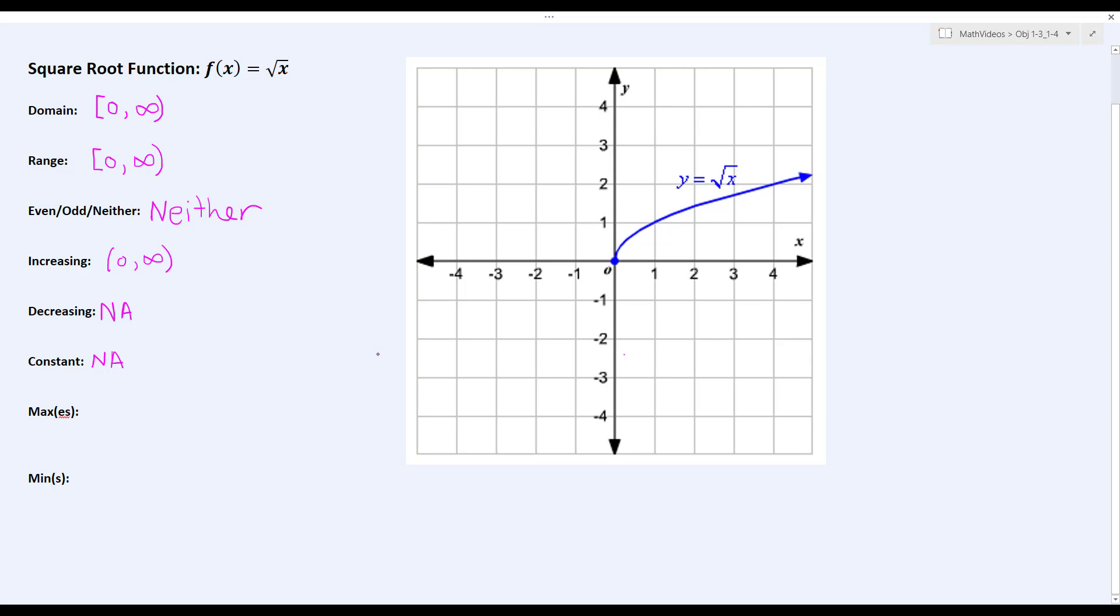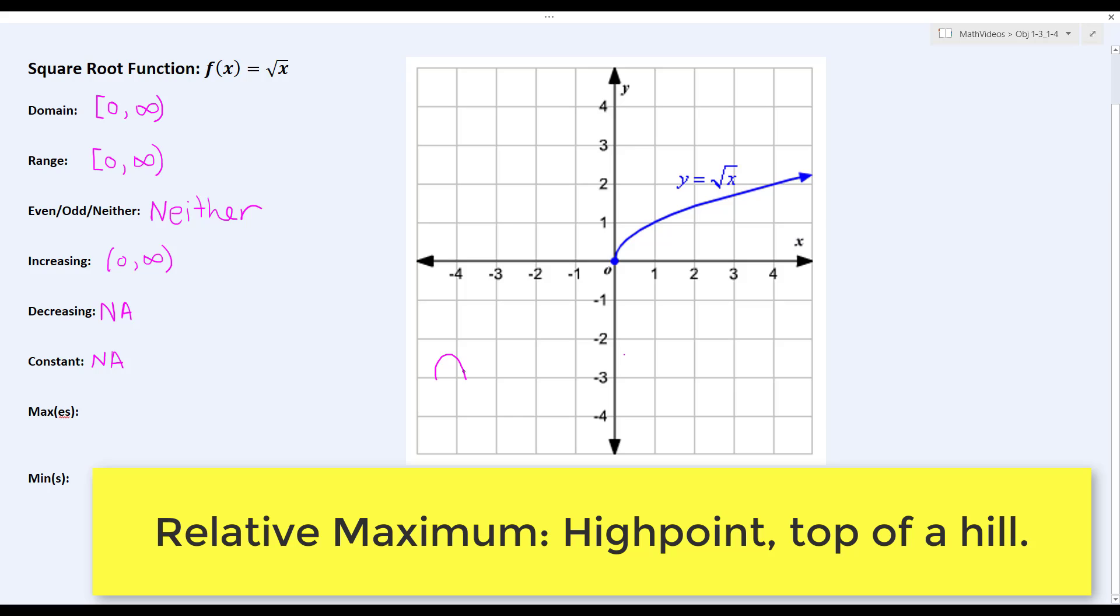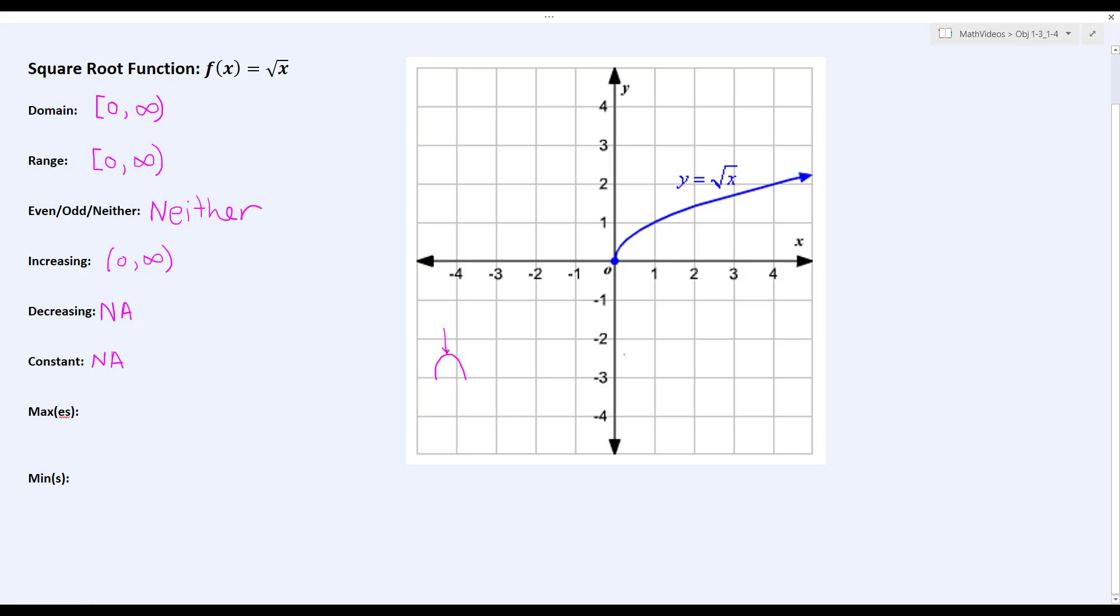Now let's take a look to see if our function f(x) = √x has any relative maximums or minimums. If you recall, a relative maximum is just a high point relative to the rest of the graph, and a high point would look like the top of a hill.